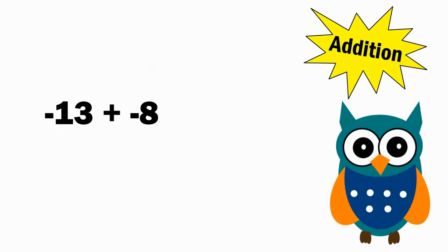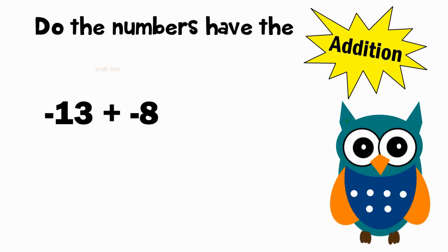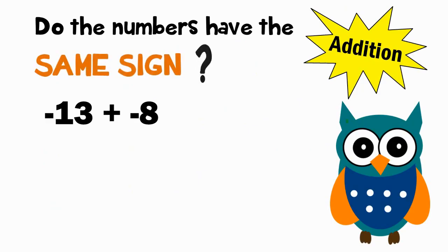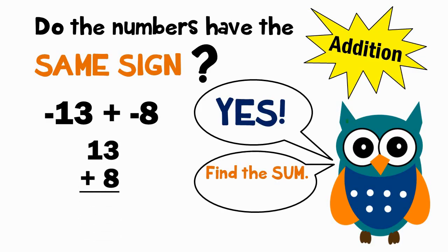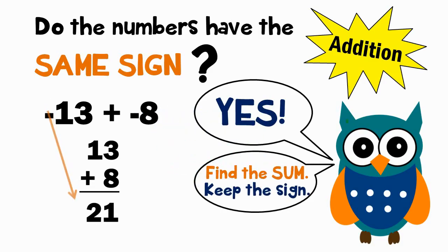We will begin with the rules for adding integers. Negative 13 plus negative 8. Do the numbers have the same sign? Yes. Find the sum: 13 plus 8. This equals 21. Keep the same sign. The sign was negative. The answer is negative 21.